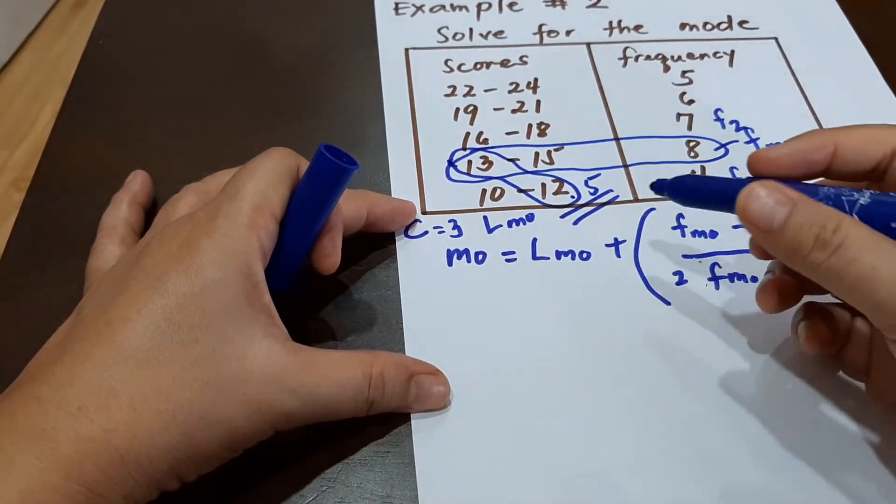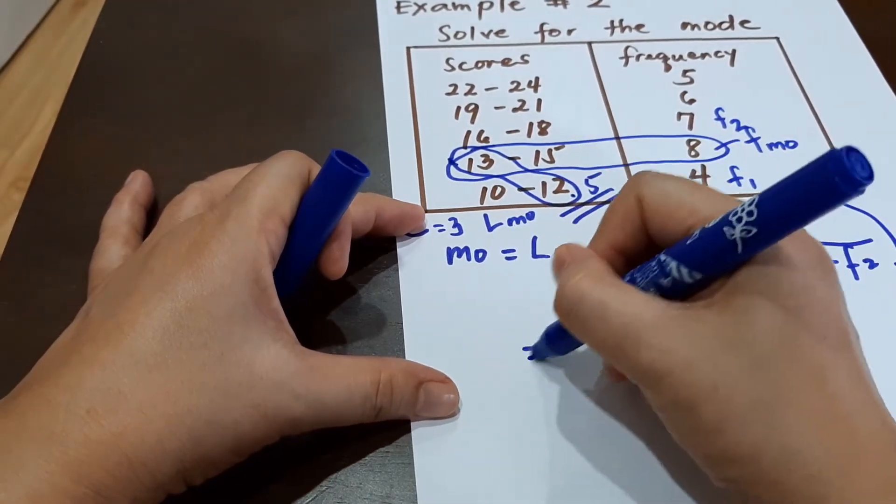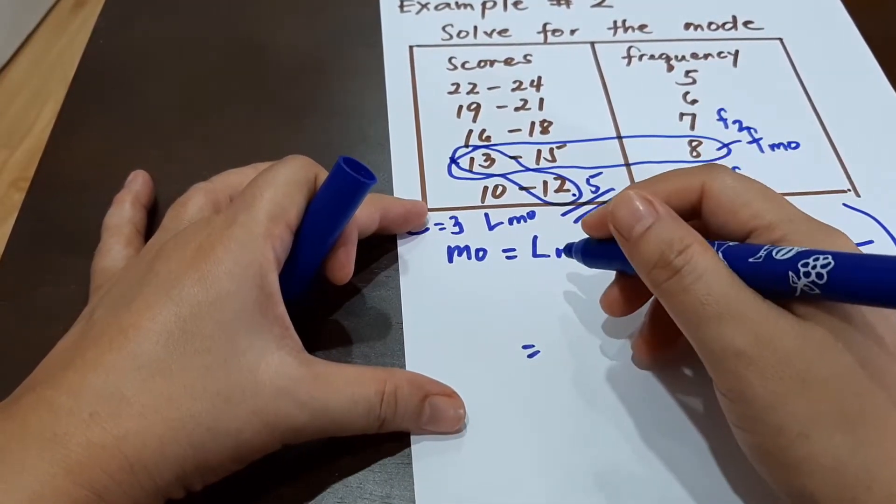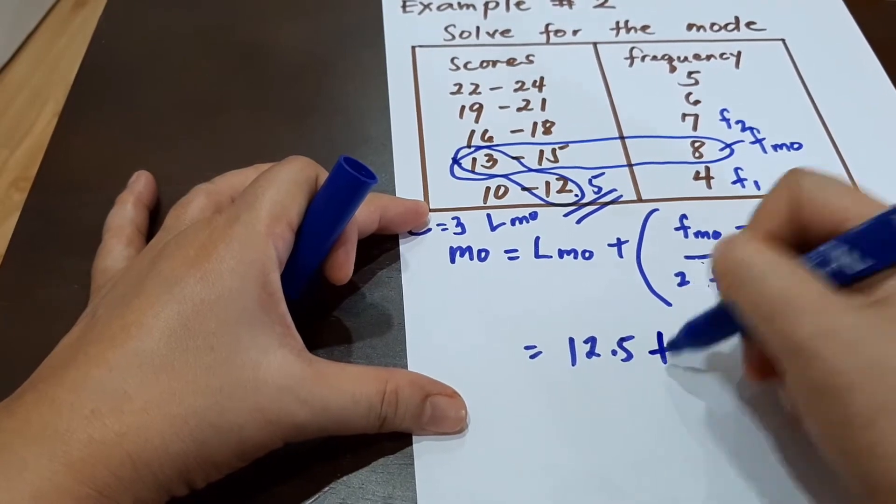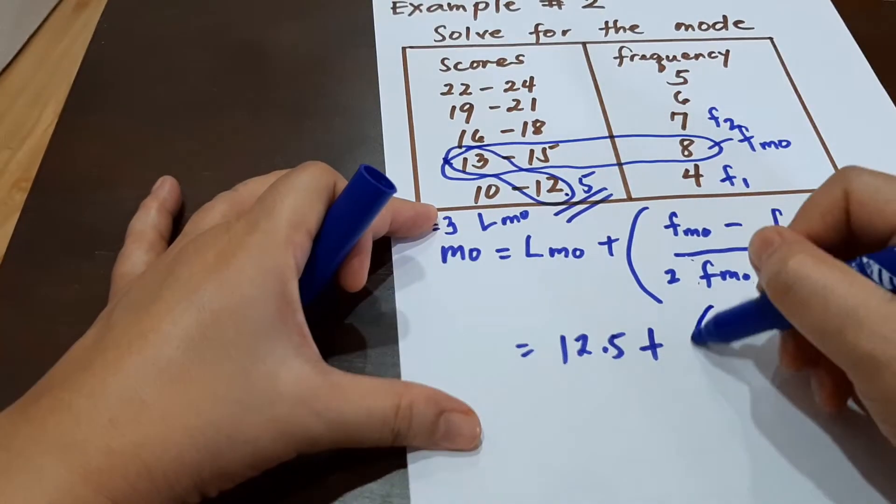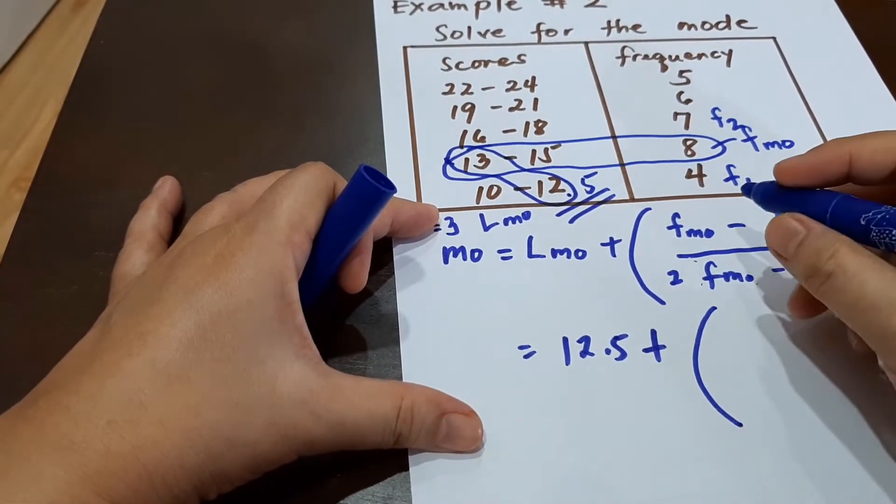So substituting all of this to our formula, we have the lower boundary of 12.5 plus the frequency of our modal class,